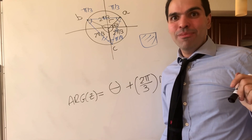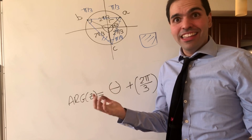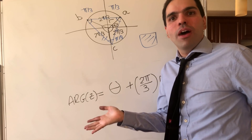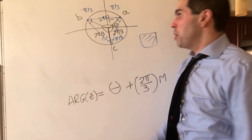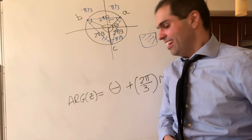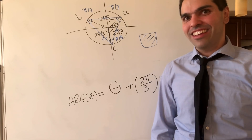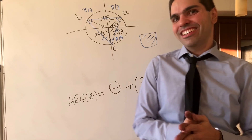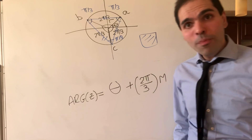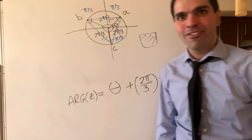How amazing is that? We started with some weird identities, and then this function (Z minus A)(Z minus B)(Z minus C) popped up, and somehow we got our result. If you think math isn't exciting, I don't know if you watched till the end of this video. All right, I hope you liked this. If you want to see more math, please make sure to subscribe to my channel. Thank you very much.